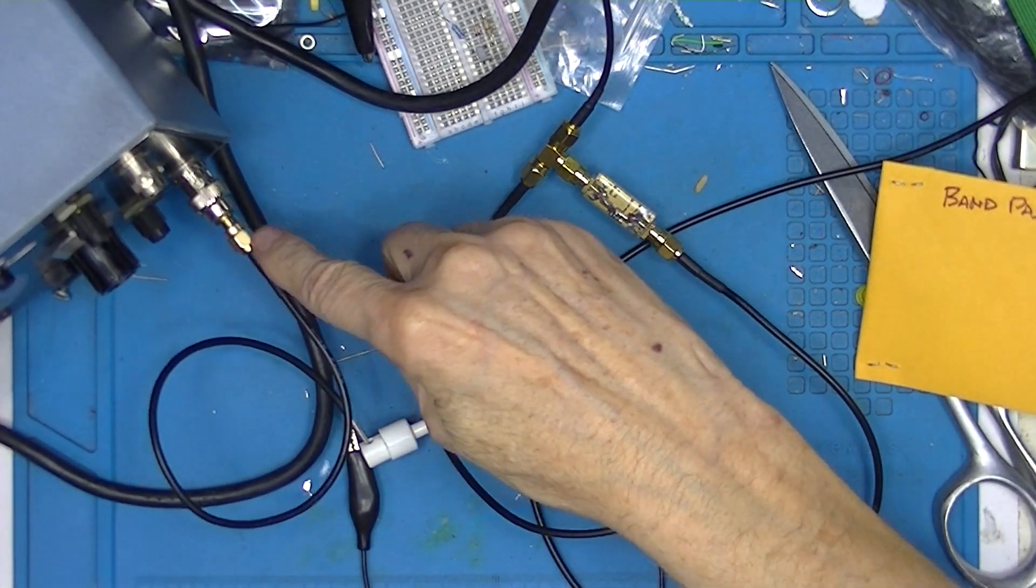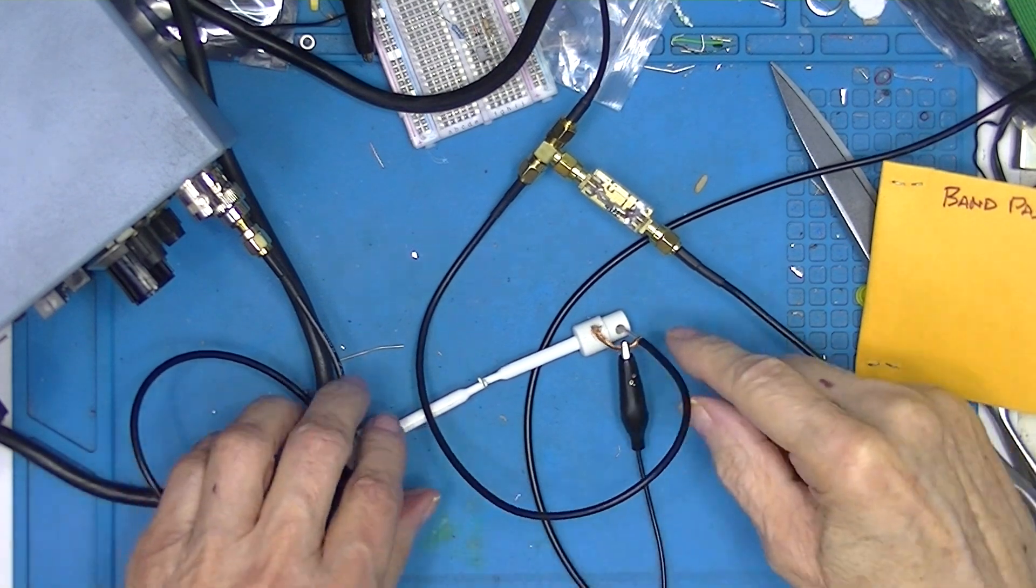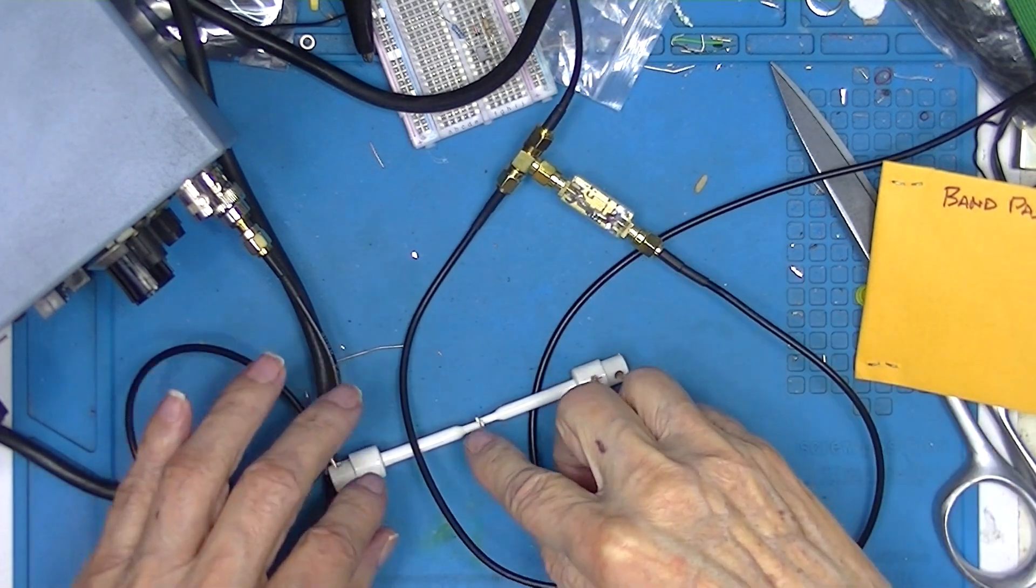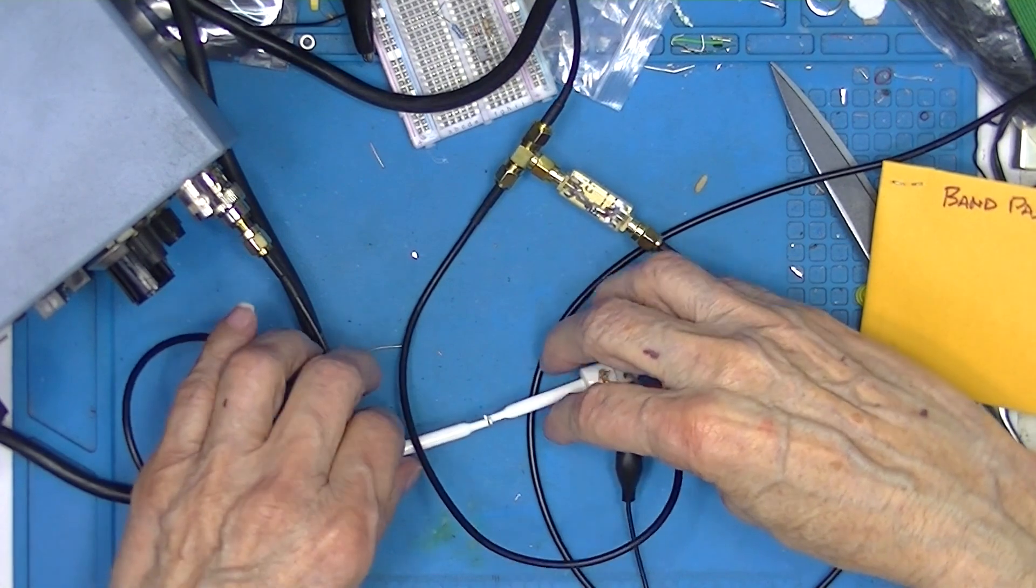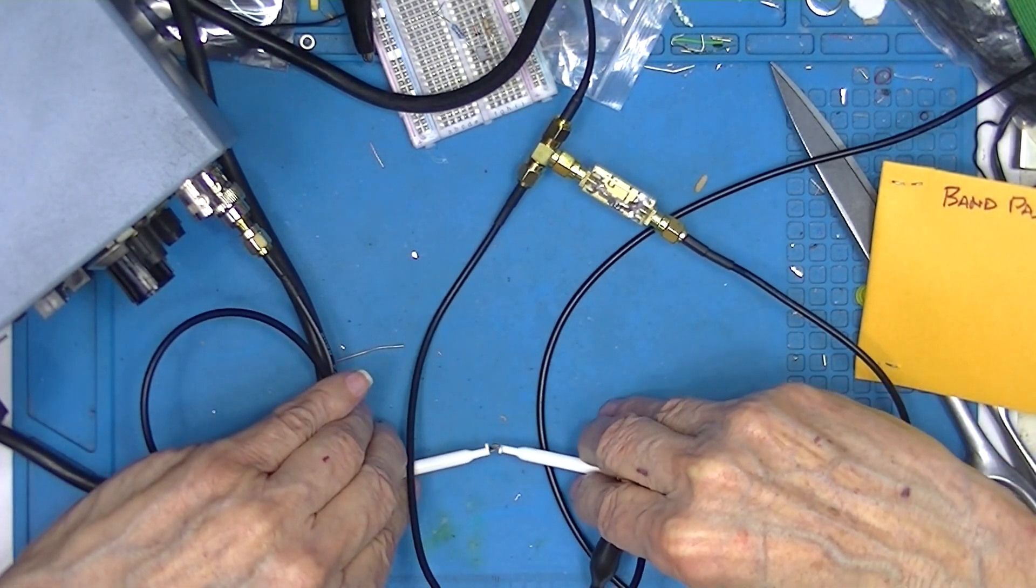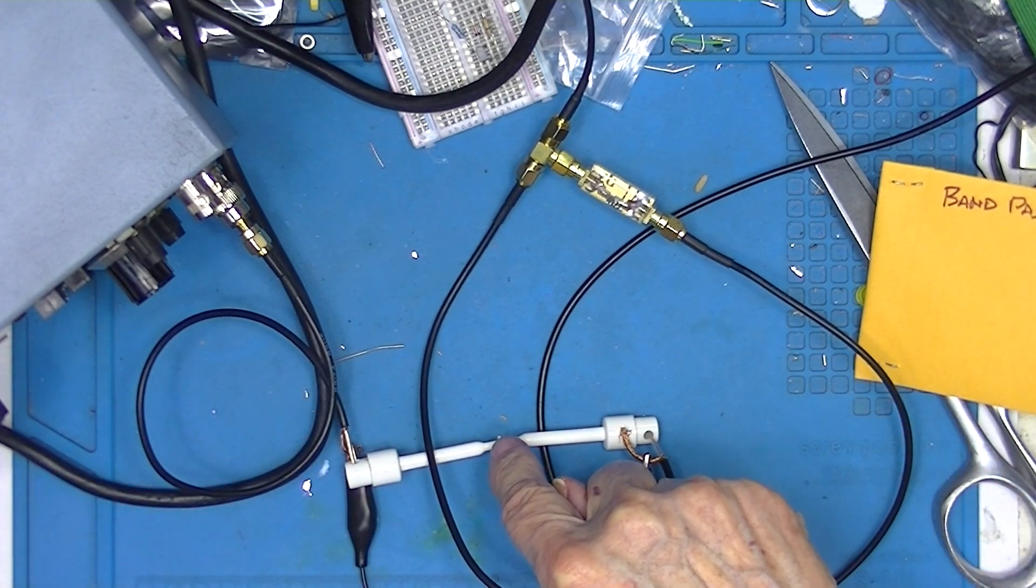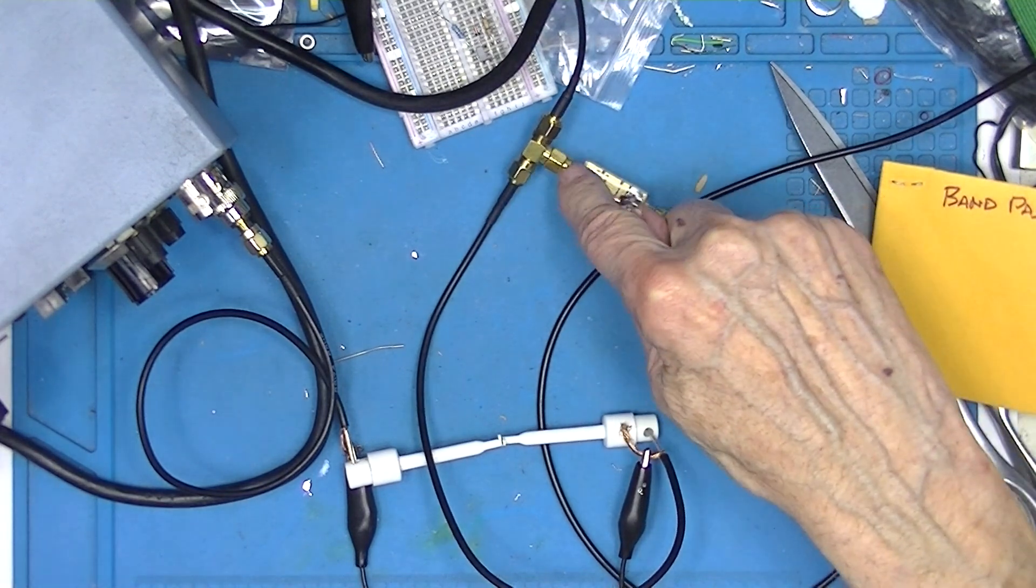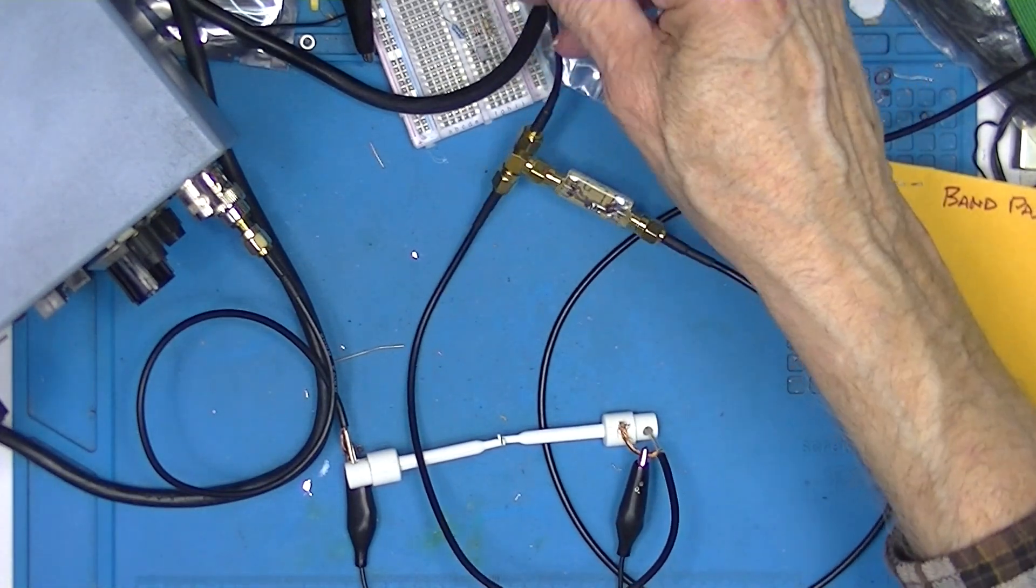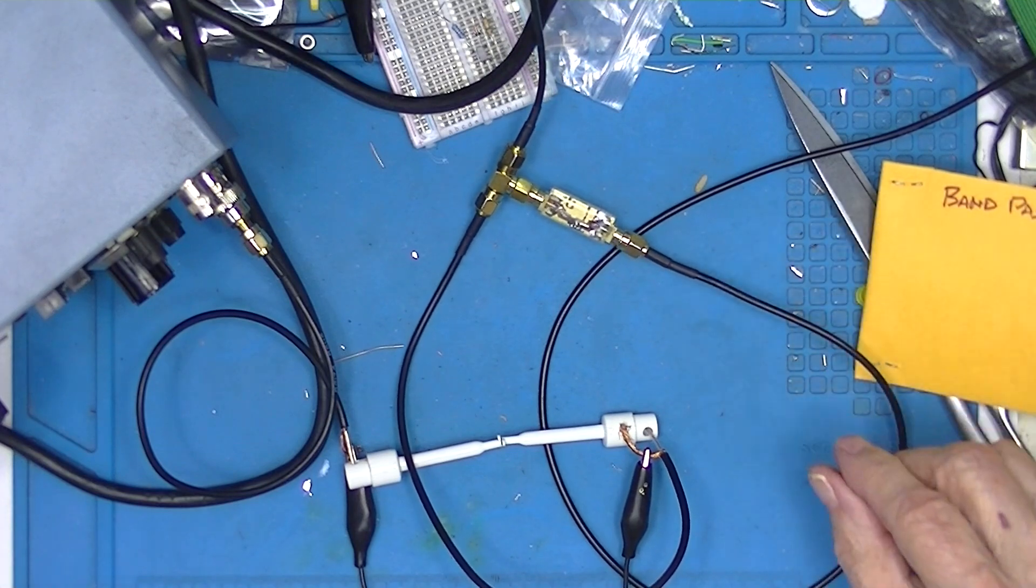This is the sweep signal coming out here, going into these connectors, hooks, these things. So I could put a device under test in here. It goes out here and goes into the detector. This is from the marker generator. This is going to the oscilloscope.